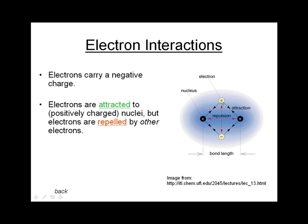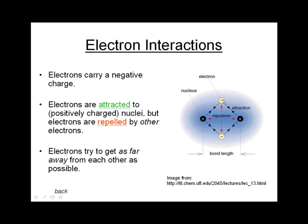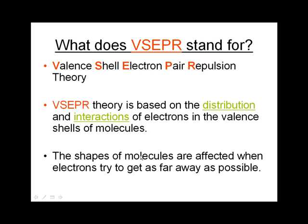If electrons have the opportunity to move around, they will find a geometry in which those electrons try to get as far away from each other as they possibly can. When we're looking at electrons that exist in separate orbitals within a molecule — specifically in the valence shell of an atom in a molecule — we will see interesting things happen as those electrons try to get away from one another. When electrons, which exist in pairs, try to get as far away from the other electron pairs as possible, that ends up influencing the shapes of molecules.